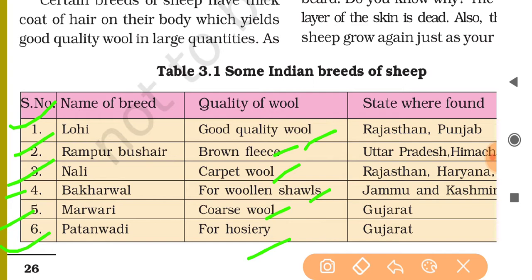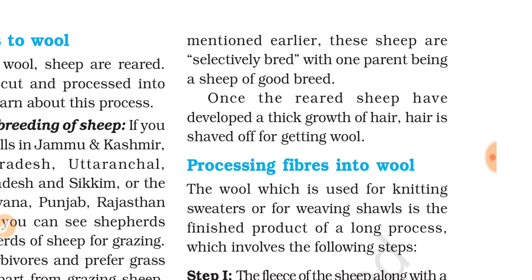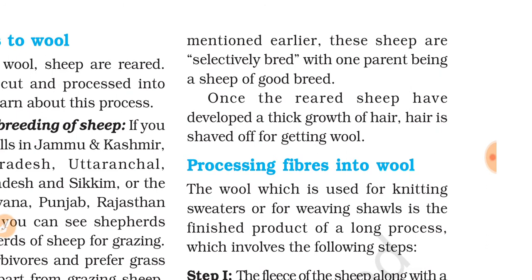These breeds vary in quality of wool — from good quality wool and brown fleece to carpet wool and coarse wool. They are found in states like Rajasthan, Punjab, Uttar Pradesh, Himachal Pradesh, Kashmir, and Gujarat. These sheep are selectively bred with one parent being a sheep of a good breed. Once the reared sheep have developed thick growth of hair, the hair is shaved off for getting wool.